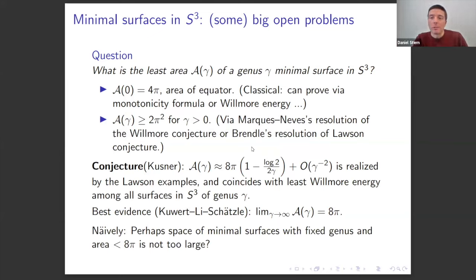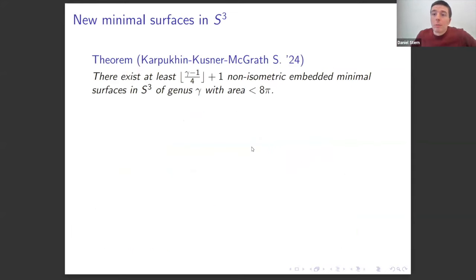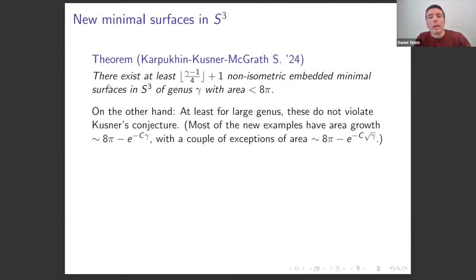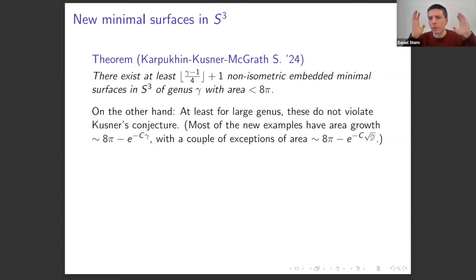If you try to study the space of minimal surfaces with a given genus and area less than 8π directly, it turns out to be quite large. In fact, there are at least roughly genus/4 non-isometric embedded minimal surfaces in the 3-sphere of genus γ with area less than 8π. Most of the new examples have area growth like 8π minus something exponential in the genus, whereas Lawson is like 8π minus a constant over the genus — so they don't violate Kusner's conjecture.